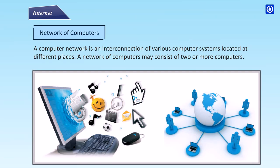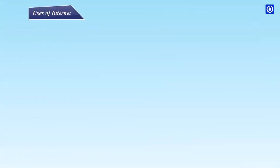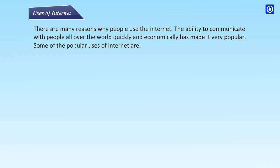A computer network is an interconnection of various computer systems located at different places. A network of computers may consist of two or more computers.